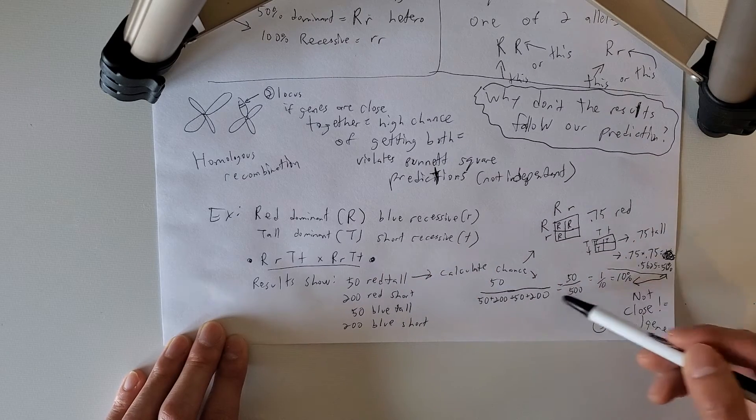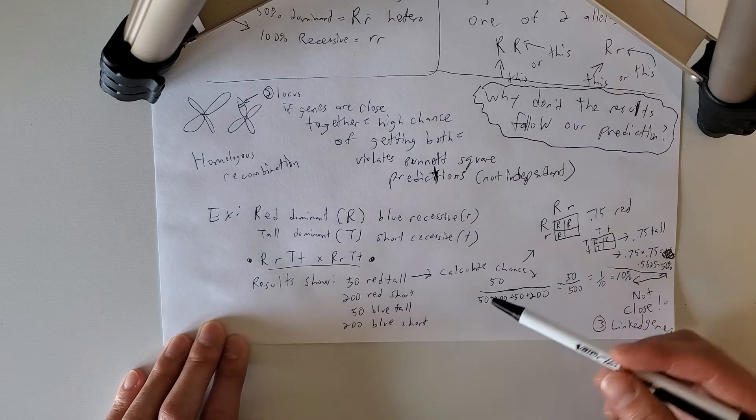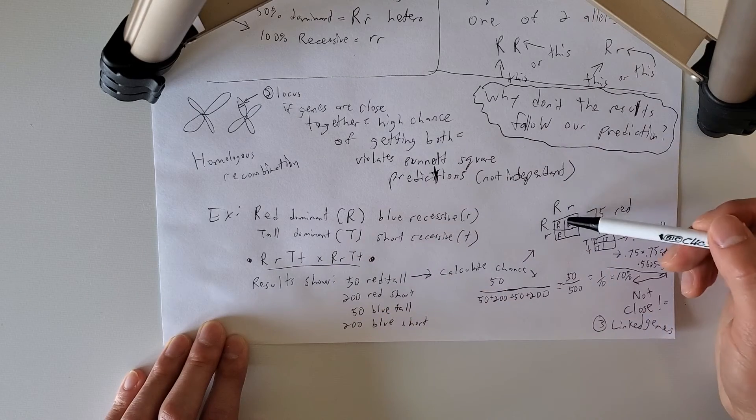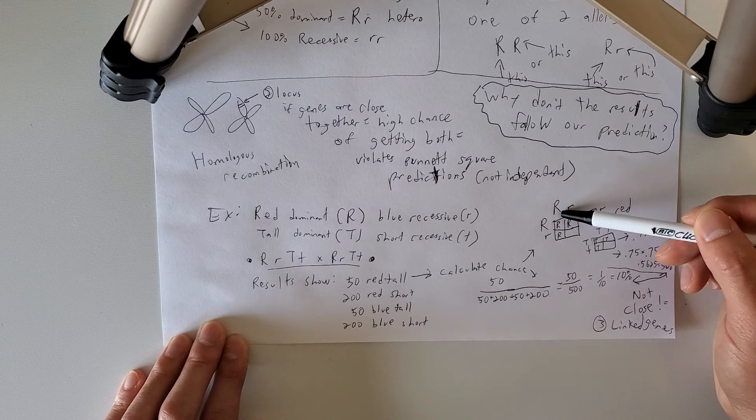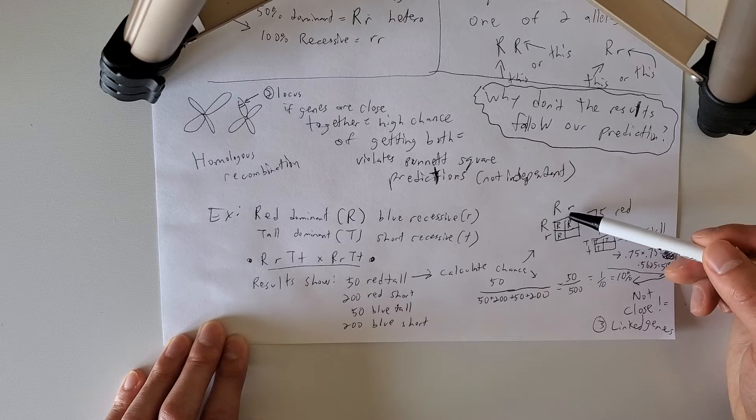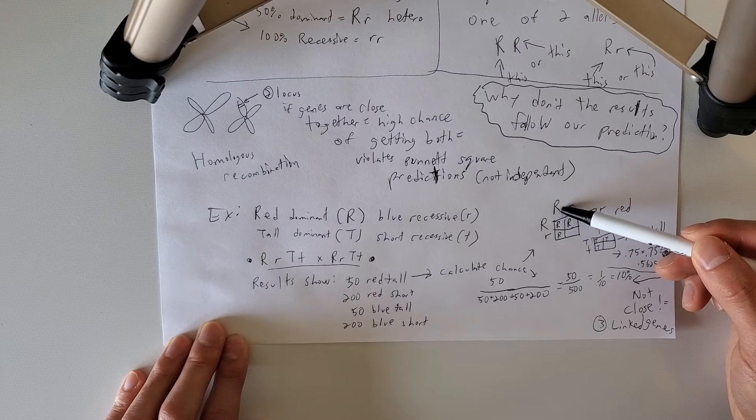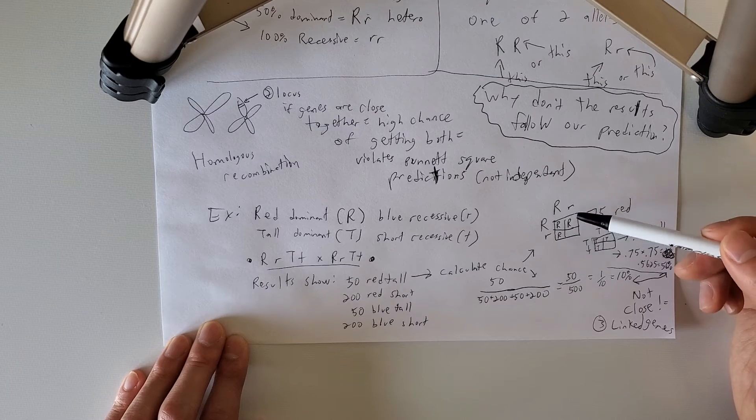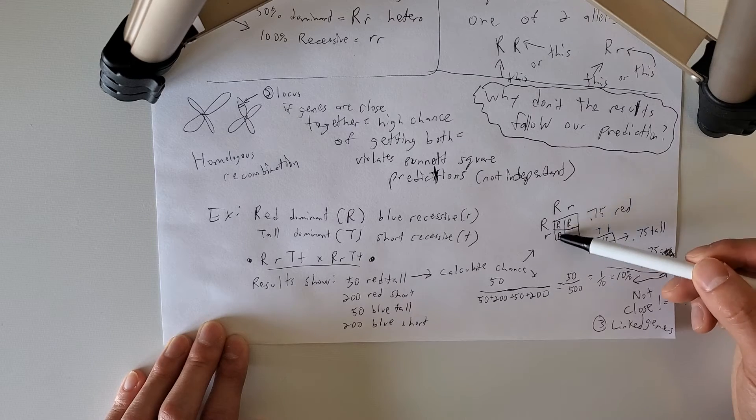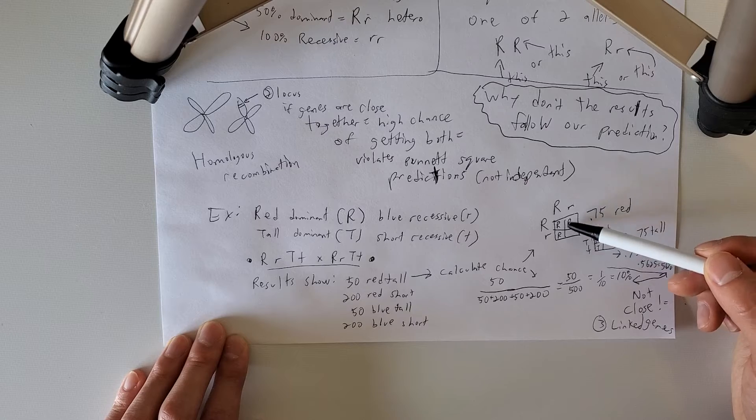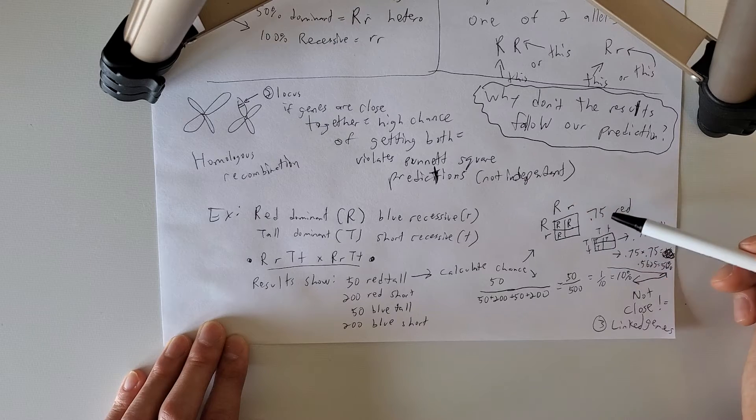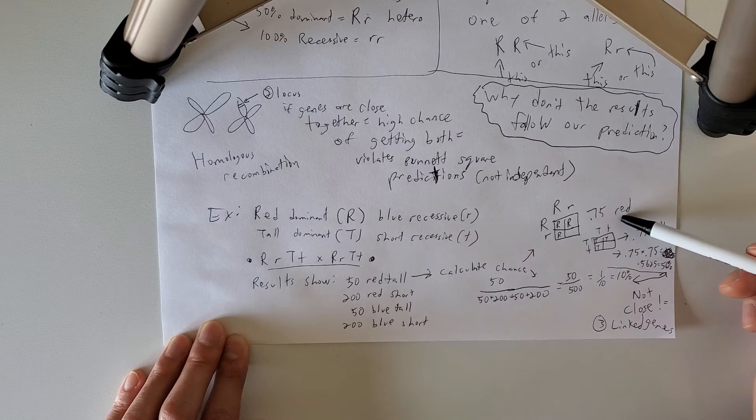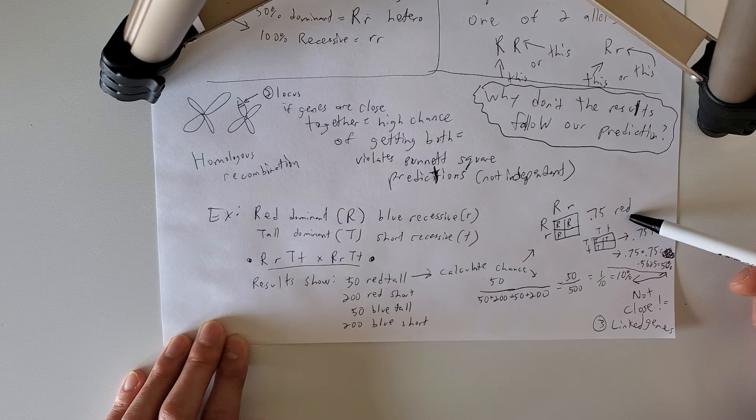Now let's compare that to our Punnett square prediction. So when we have two traits, once again, we need to do each one individually. So here, the red, I'm going to calculate my chance of red. So I only do the dominant one because as long as it has the dominant allele there, that's the only trait that is going to be shown. So three out of the four boxes has the dominant allele. So it's a 0.75 chance. Three out of four is 0.75 chance of red, otherwise 75% chance of red.